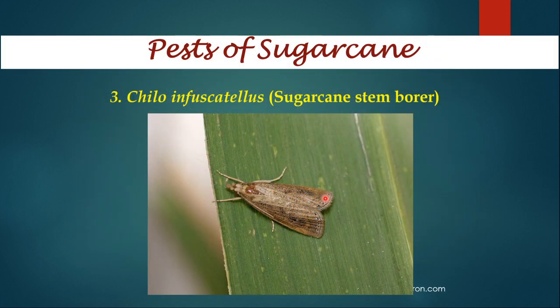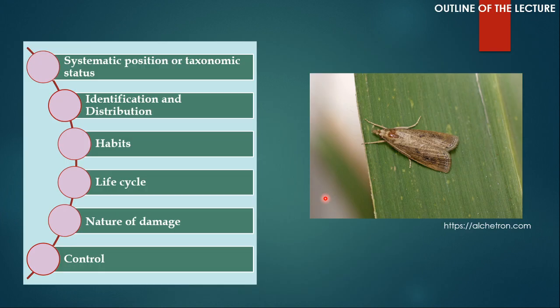Now let us talk about one of the most important pests of sugarcane, the sugarcane stem borer or Chilo infuscatellus. To talk about the biology of this pest, I am going to discuss the systematic position or taxonomic status, identification and distribution, habits, life cycle, nature of damage, as well as control.